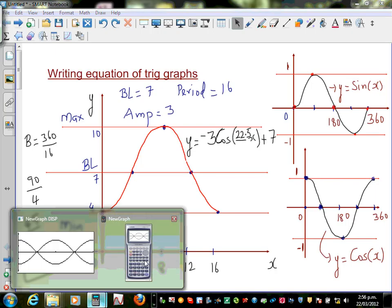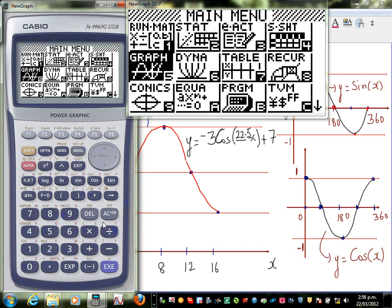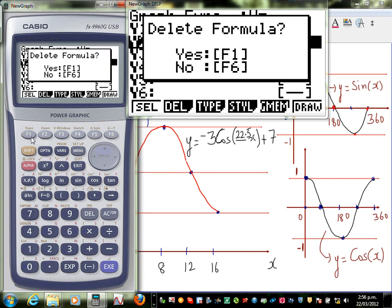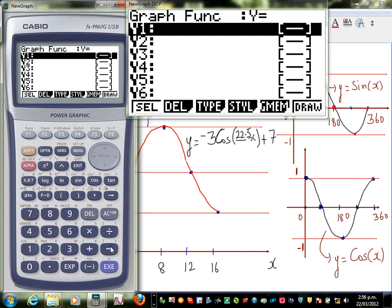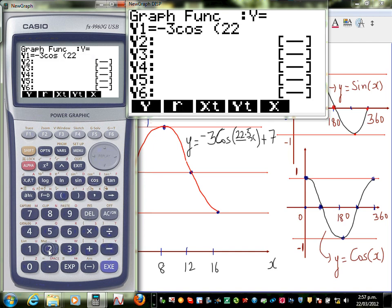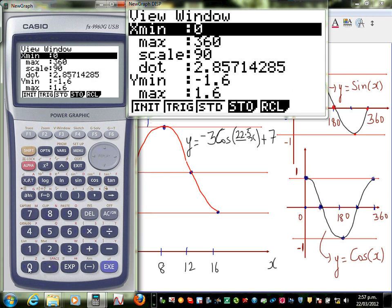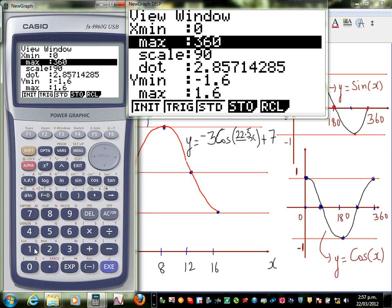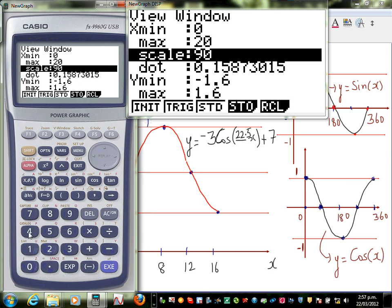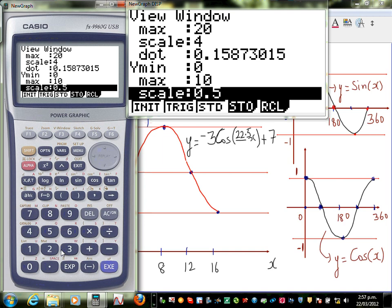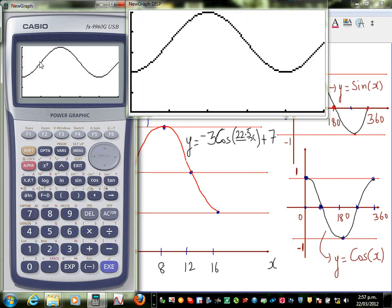Here is my calculator. So, go to graph and let me delete the equation. Delete, delete, delete, and delete. And I will type in minus 3 cos 22.5 x plus 7. And now I need to change my scale. So shift V window. I will go from 0 to 20, and a scale of 4 going at a pitch of 4. And I will go from 0 to 10, scale of 2. And then draw it. You know, you got this is one cycle and a quarter cycle.